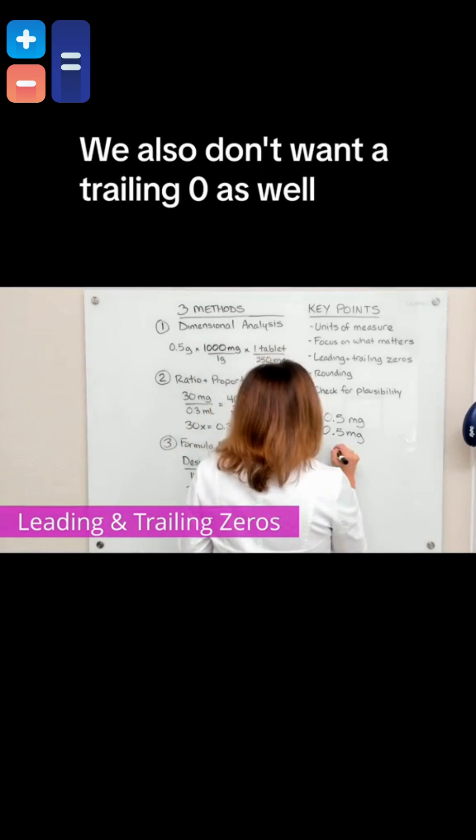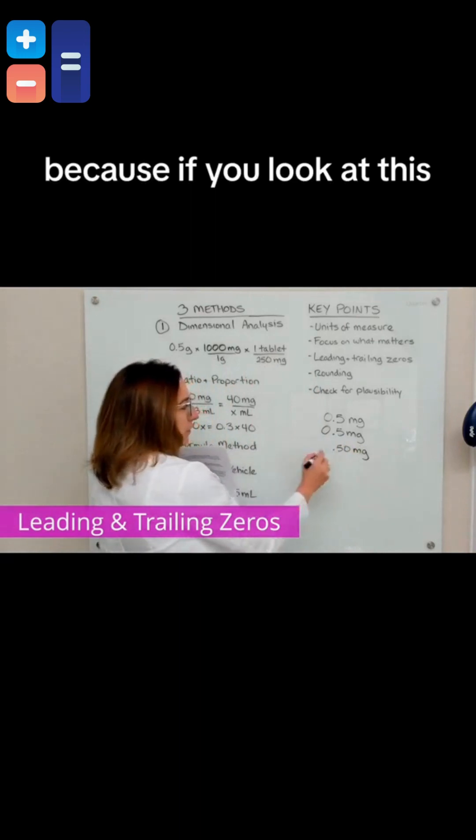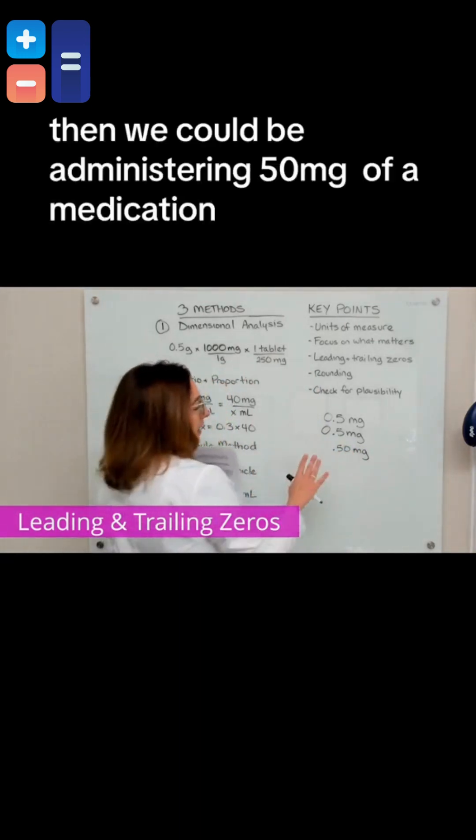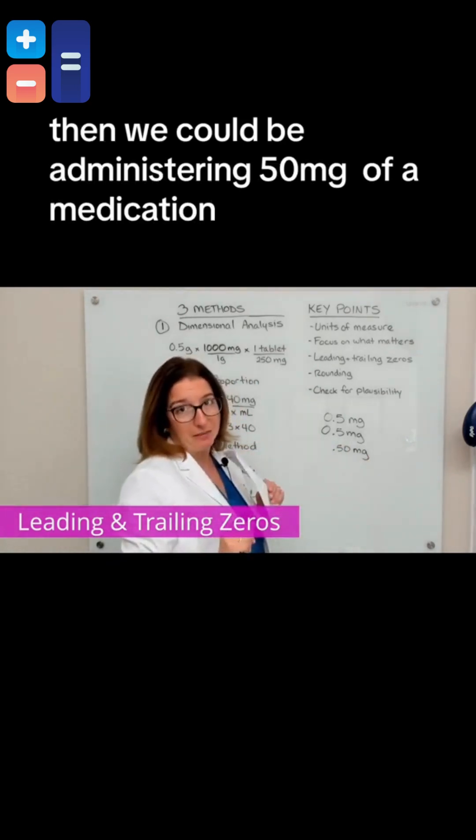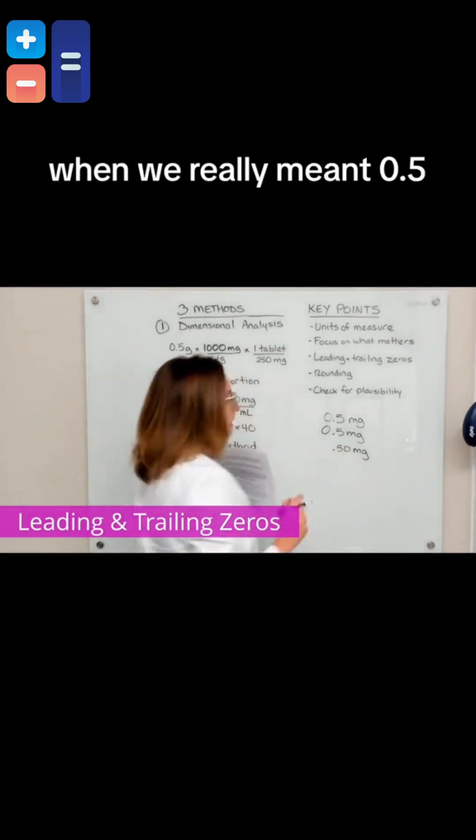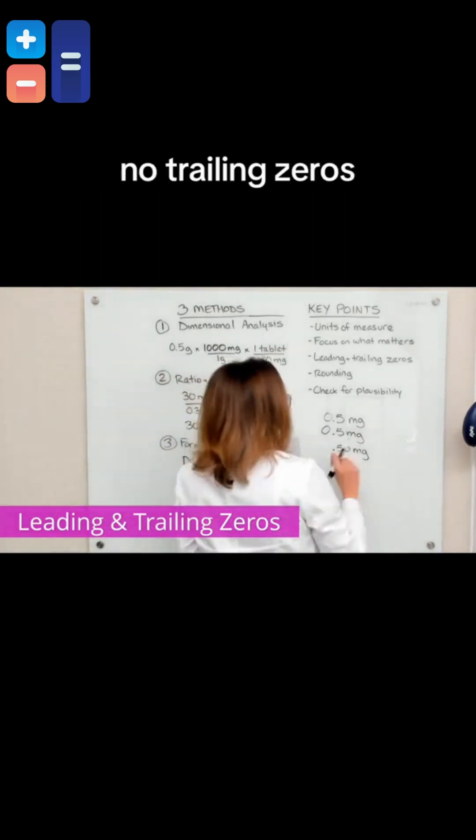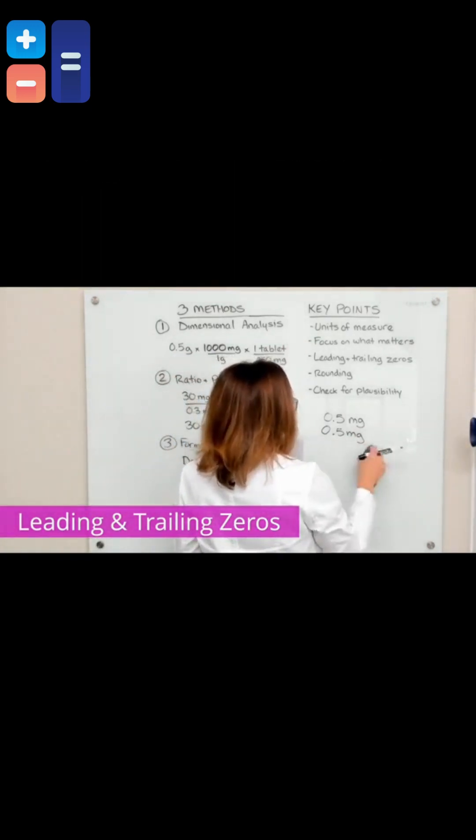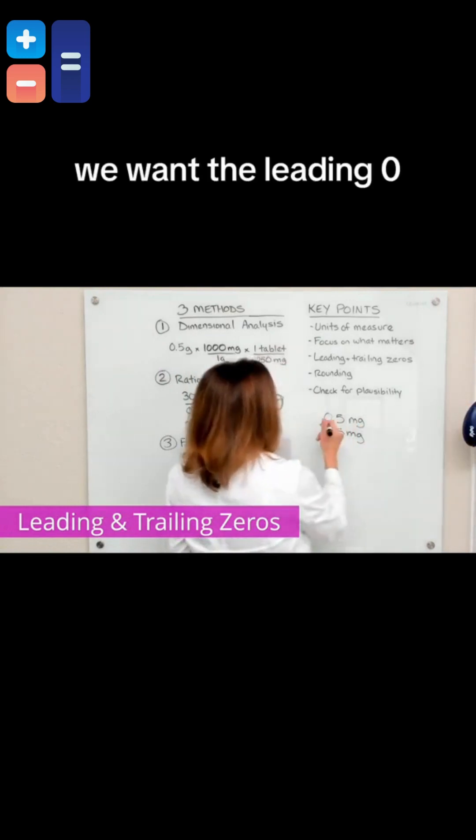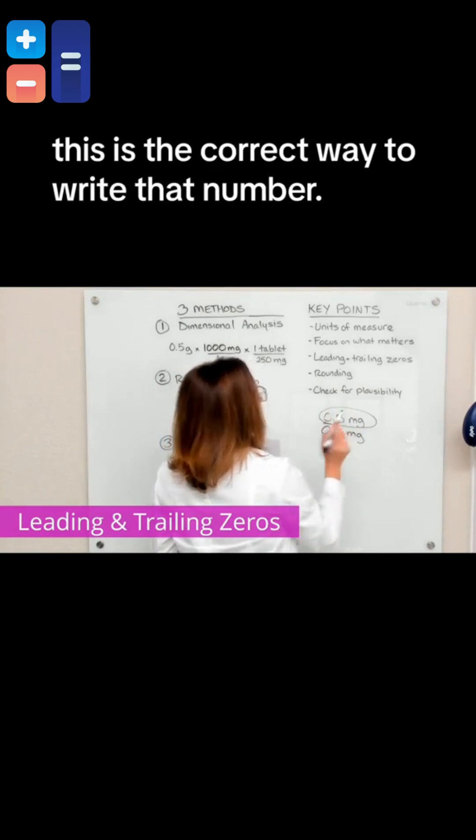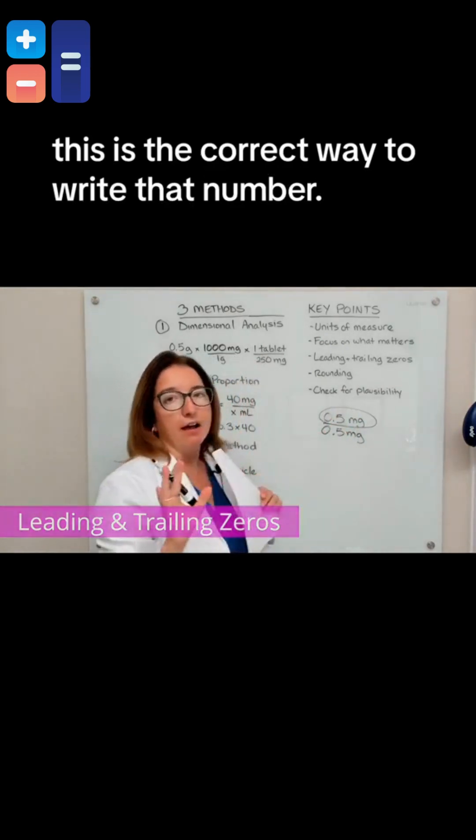We also don't want a trailing zero as well. Because if you look at this, if that decimal point wasn't totally clear, then we could be administering 50 milligrams of a medication when we really meant 0.5, like half of a milligram. So no trailing zeros. We want the leading zero, no trailing zeros. This is the correct way to write that number.